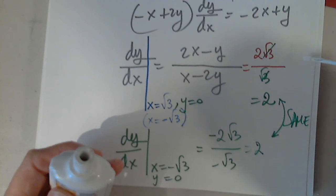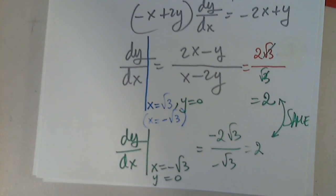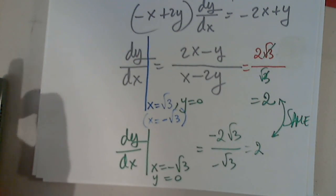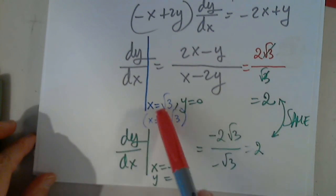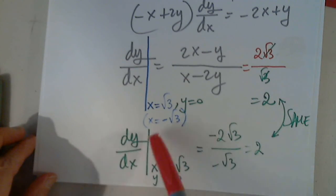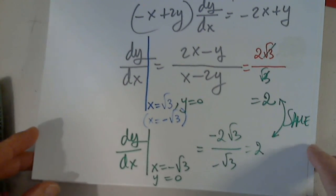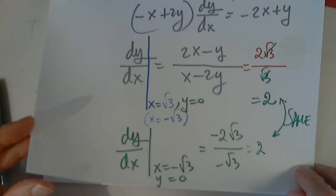For a second I forgot that those points were determined and they came from y equals 0. That's why it's always safe to write the y values when you evaluate — always. That way there is no error.